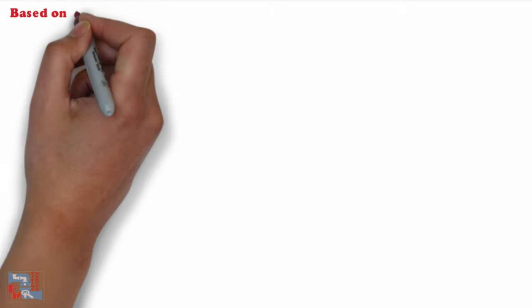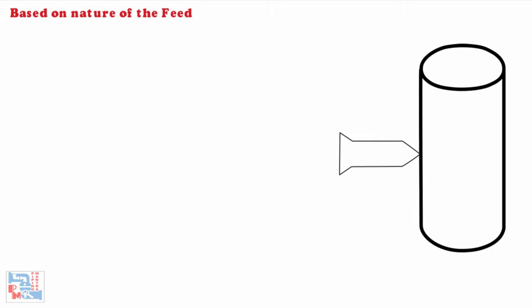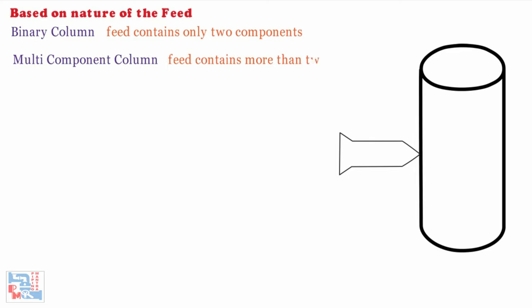Now based on the nature of the feed the distillation columns are processing there are two types of columns. First is binary column where feed contains only two components. Next is multi-component column where feed contains more than two components.